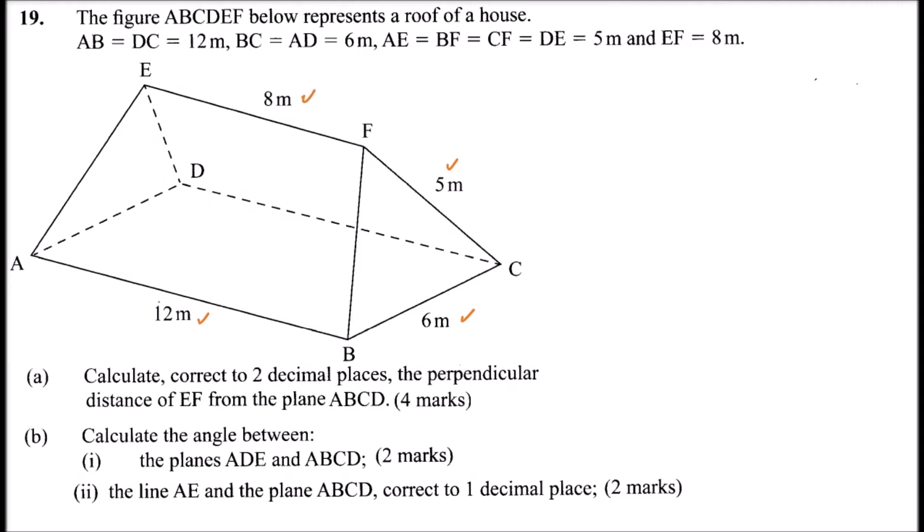Part (a): calculate, correct to two decimal places, the perpendicular distance from EF to the plane ABCD. What we are going to do is drop a perpendicular from F to the plane ABCD, and use the measurements given to calculate that.